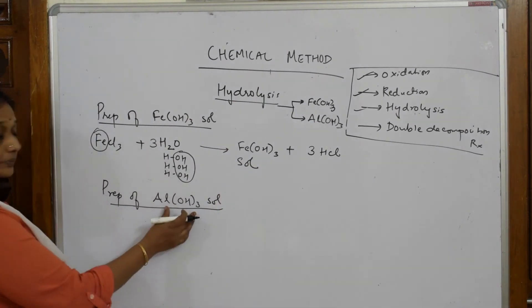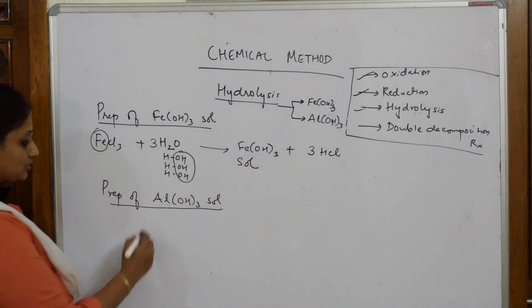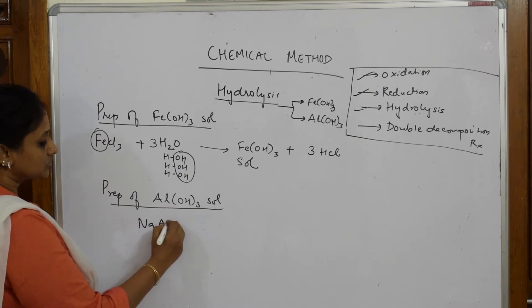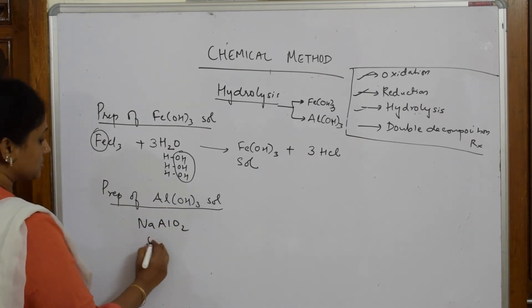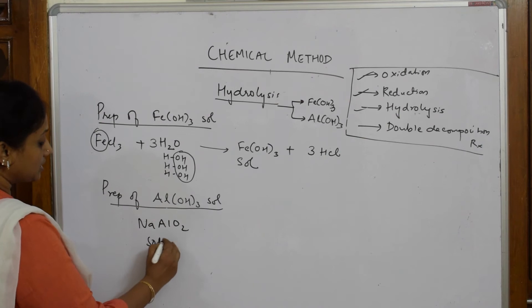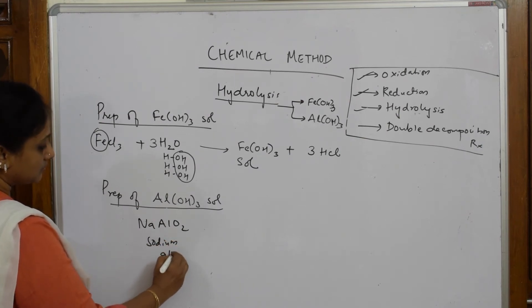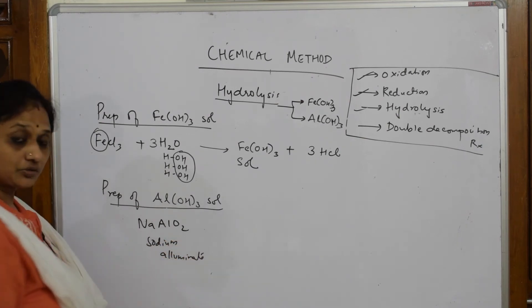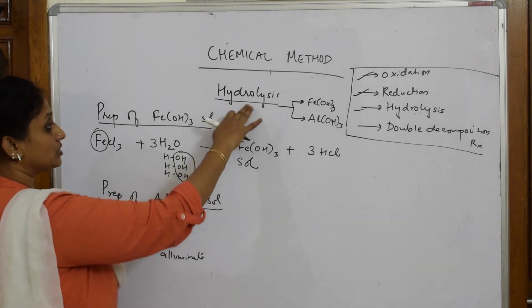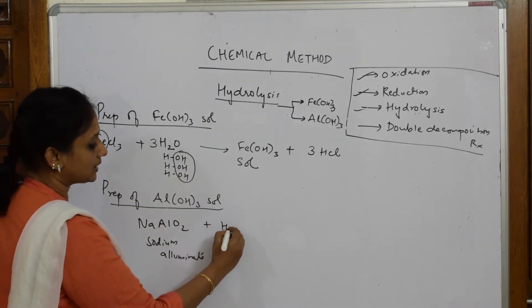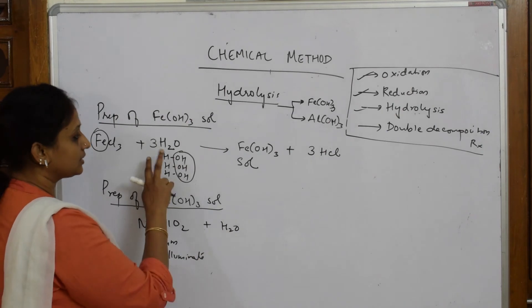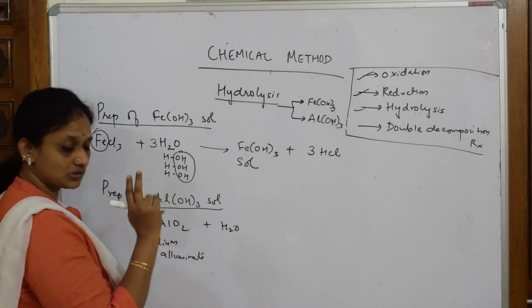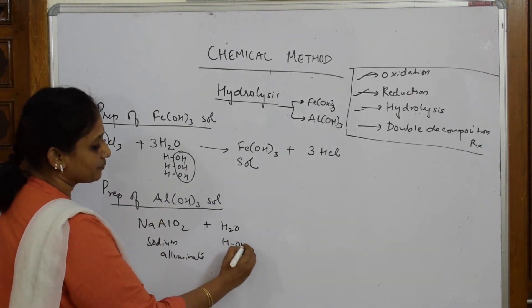Now let us write the reaction for preparing aluminium hydroxide. I am going to take sodium aluminate. This is how you write sodium aluminate. To this I am adding water — this is a hydrolysis reaction. Here I added 3 moles for FeCl3; here let me add 2 moles of water and see.